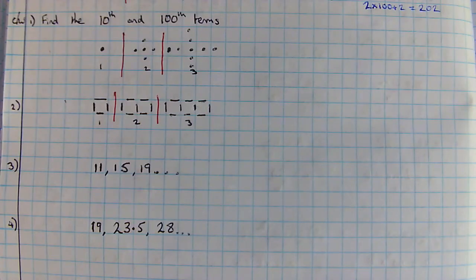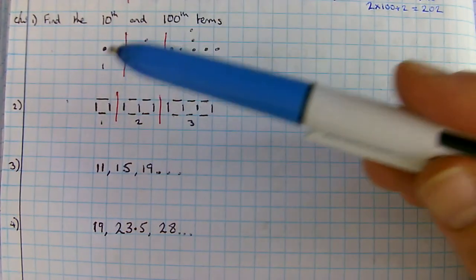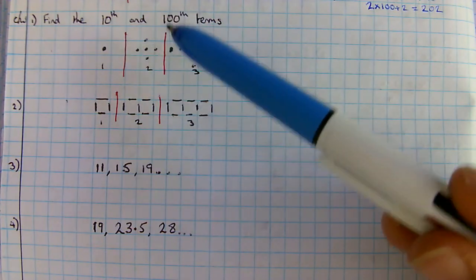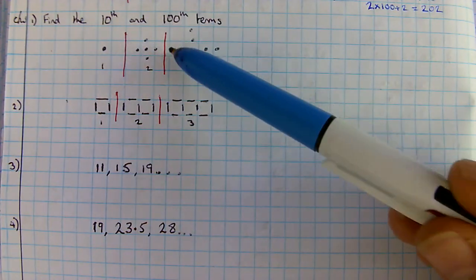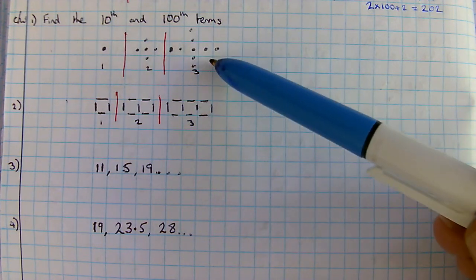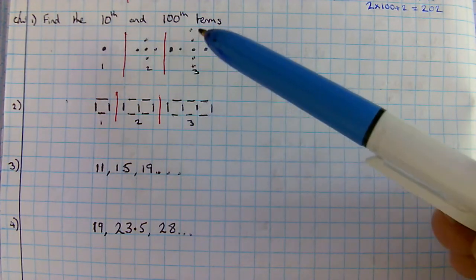Here's a few patterns for you to explore. For each one we need to find the tenth term and the hundredth term. Here you've got one dot followed by five dots, and then you get an additional four dots, one at the end of each branch. You'll need to work out how many you'd have on the tenth pattern and hundredth pattern.